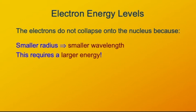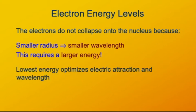So, the lowest energy possible state, the ground state of an electron, is going to be one that optimizes both the electric interaction and the wavelength. So, the electric interaction wants to make the electron close to the nucleus. The wave nature makes it want to have a larger area to move around it.